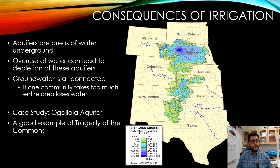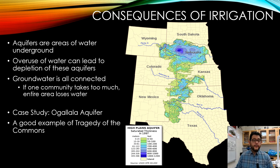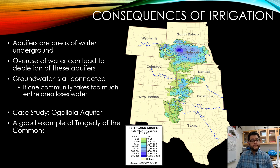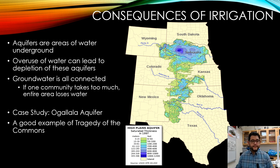The problem is that this leads to depletion of aquifers. Looking at this diagram, it's a great example of the tragedy of the commons — South Dakota, Nebraska, Wyoming, Colorado, Kansas, Oklahoma, New Mexico, and Texas all have water rights to portions of this aquifer. When one state takes more, it affects the others. This is a classic tragedy of the commons situation where overuse by any party harms everyone.